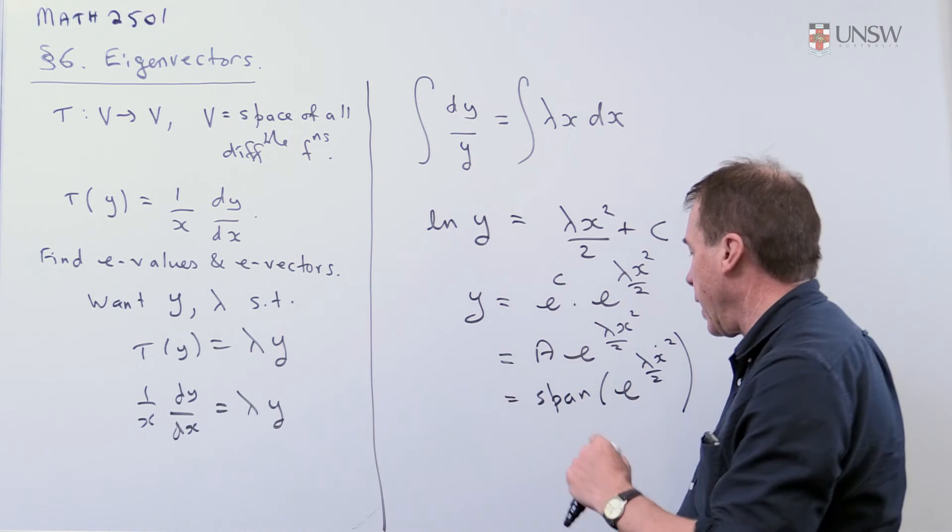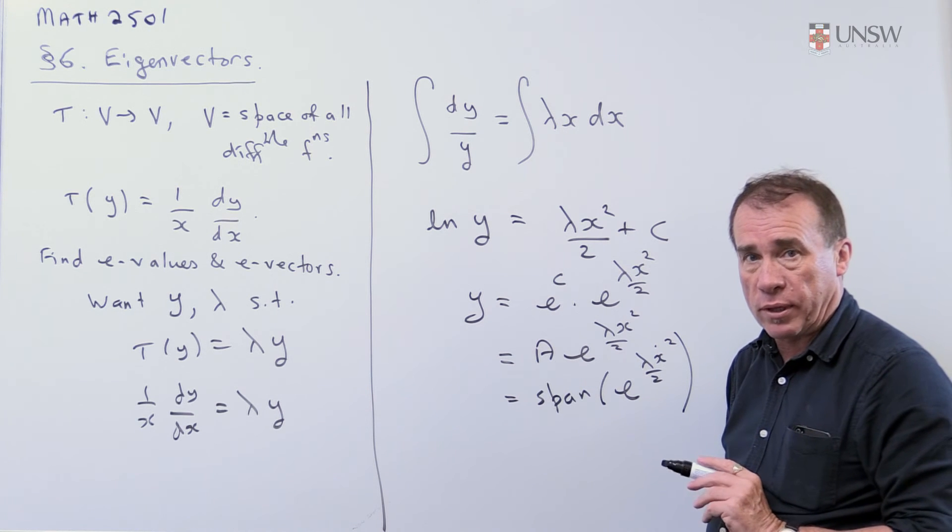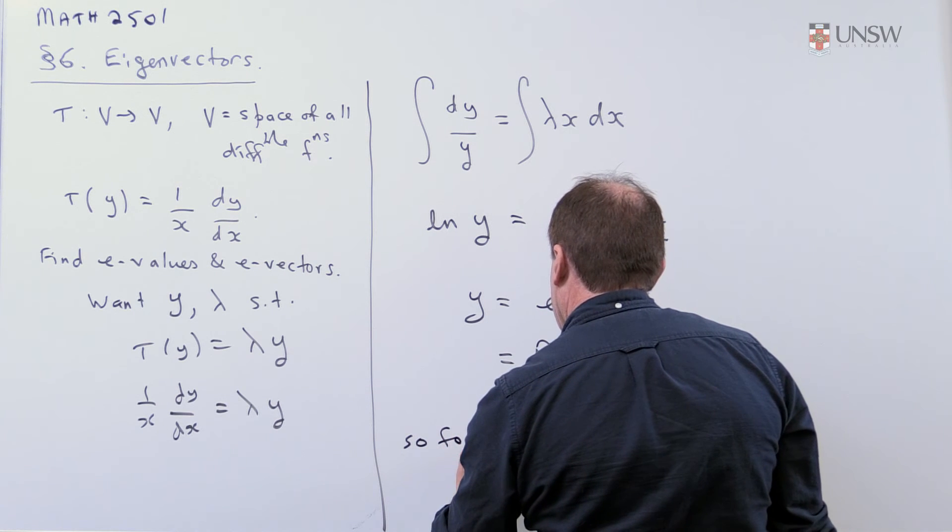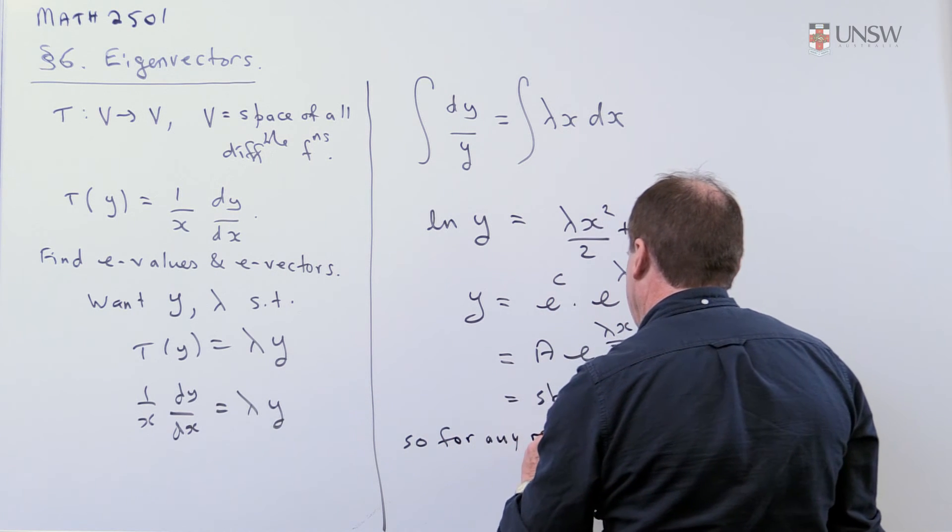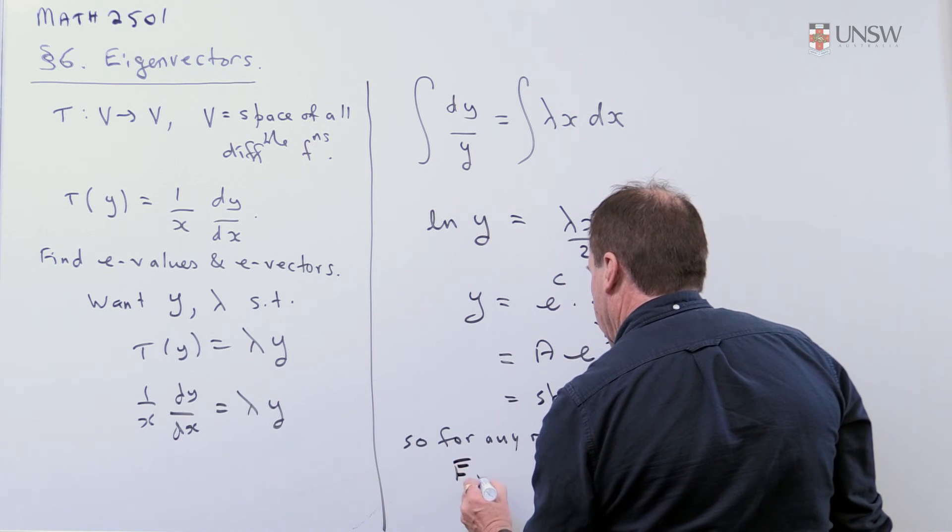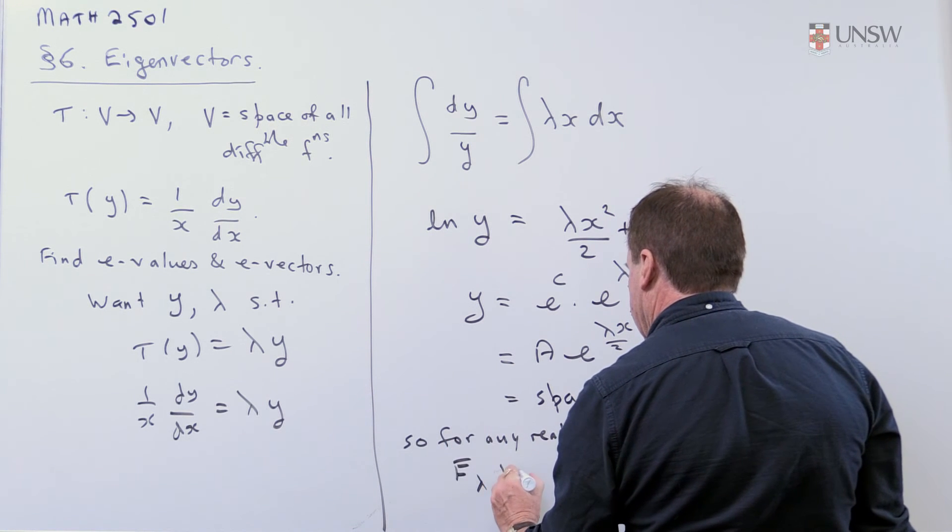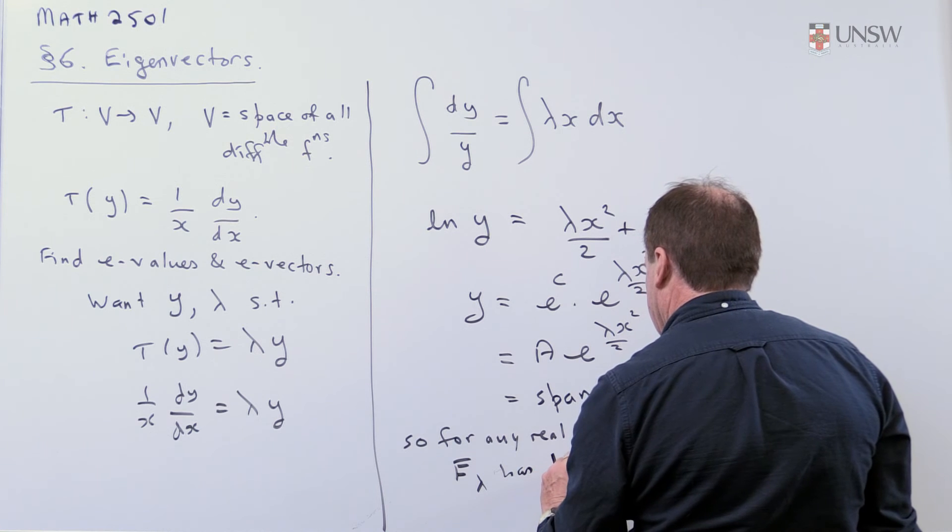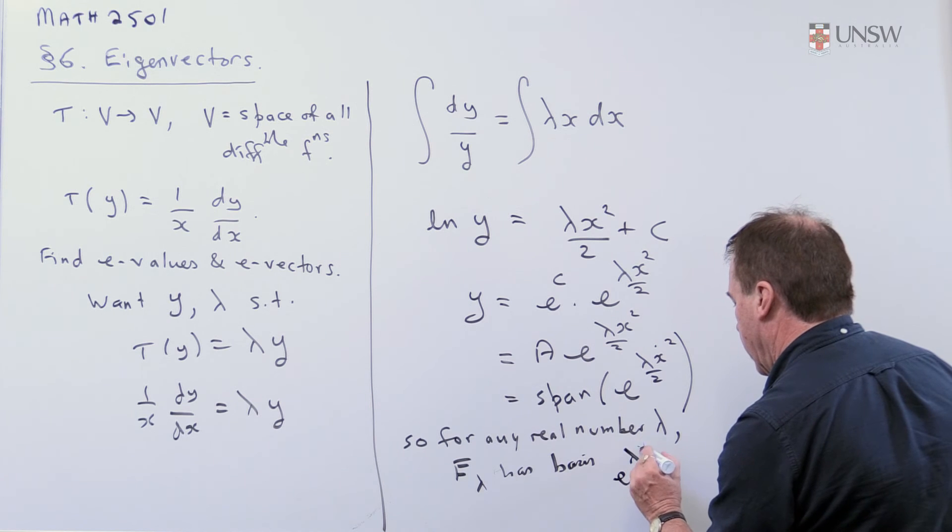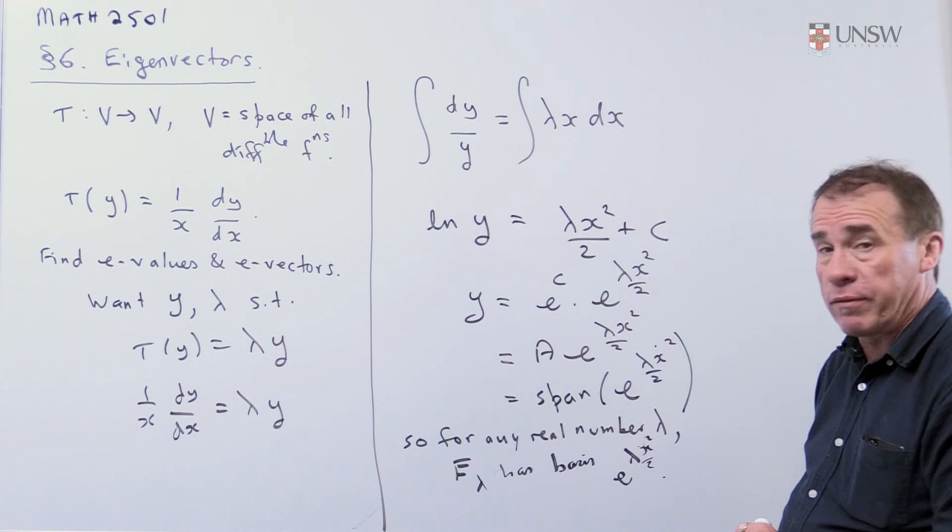Once I pin down the lambda, that gives you the corresponding eigenvector, or eigenfunction if you want to call it that. So for any real number lambda, the eigenspace corresponding to λ has basis e^(λx²/2). And so that'll be the eigenfunction corresponding to the eigenvalue.